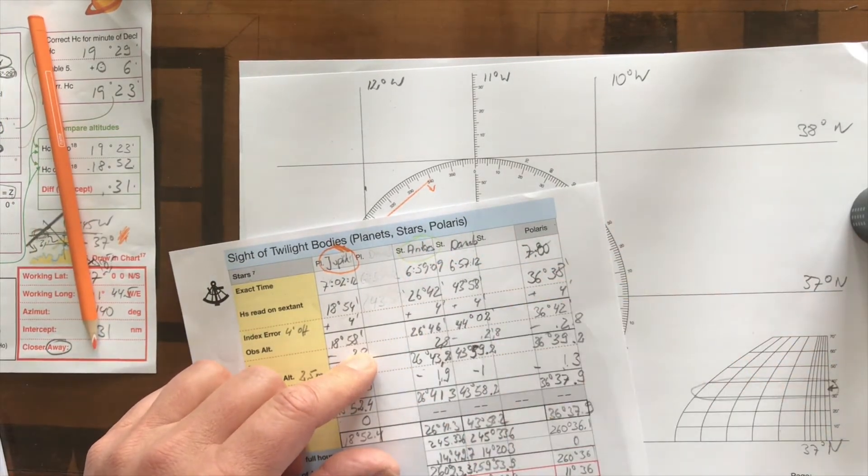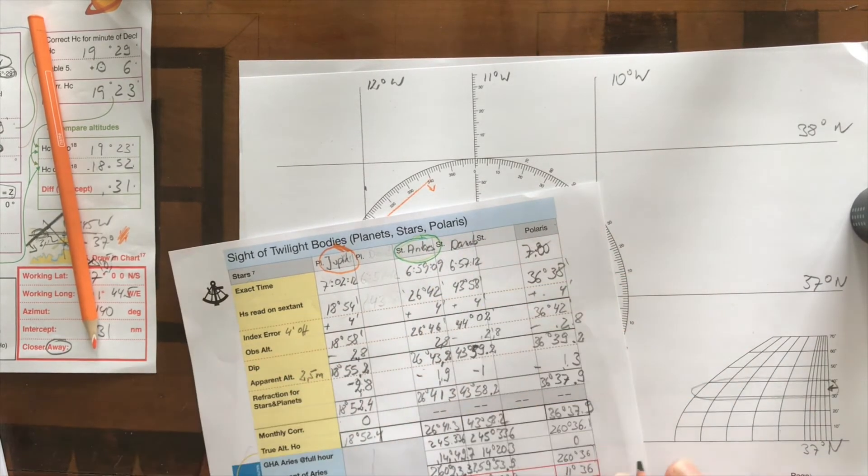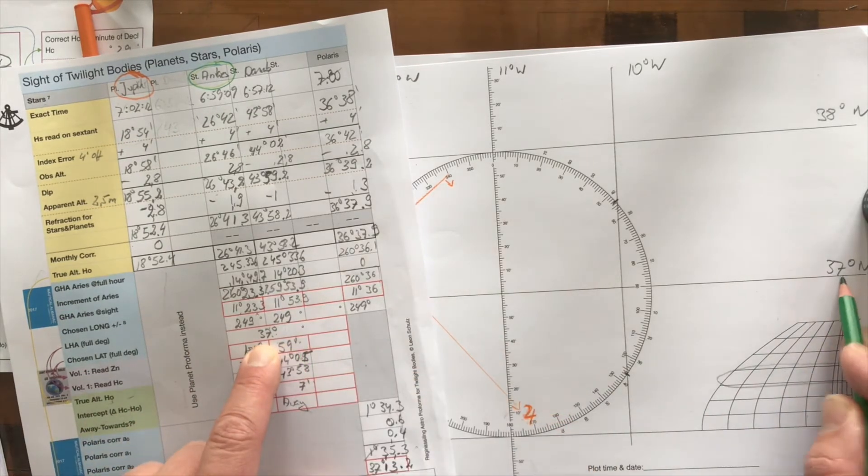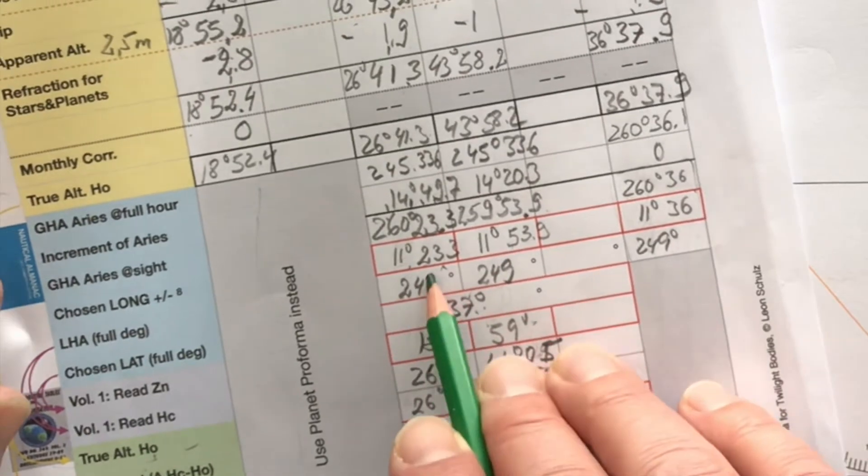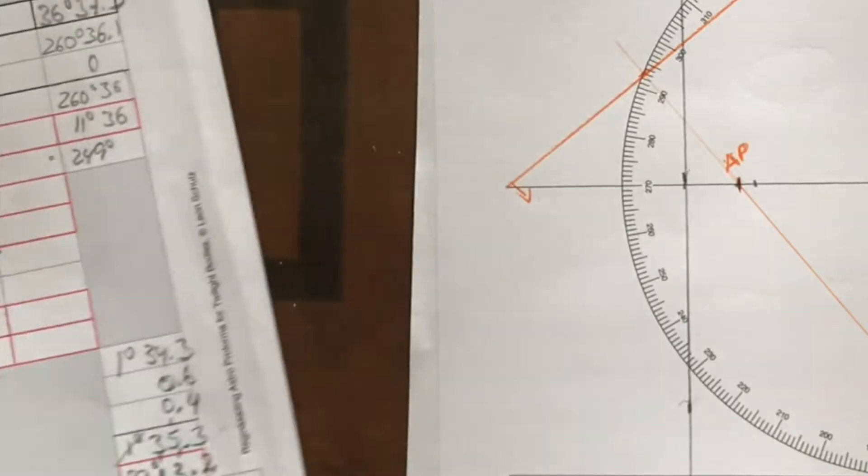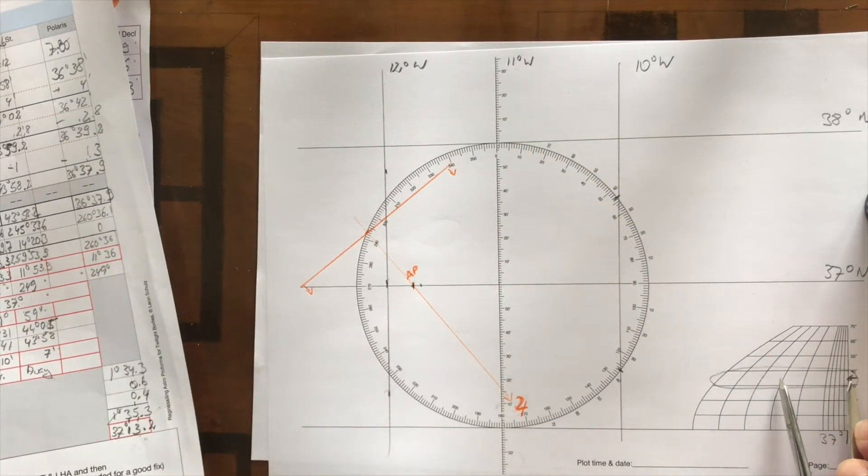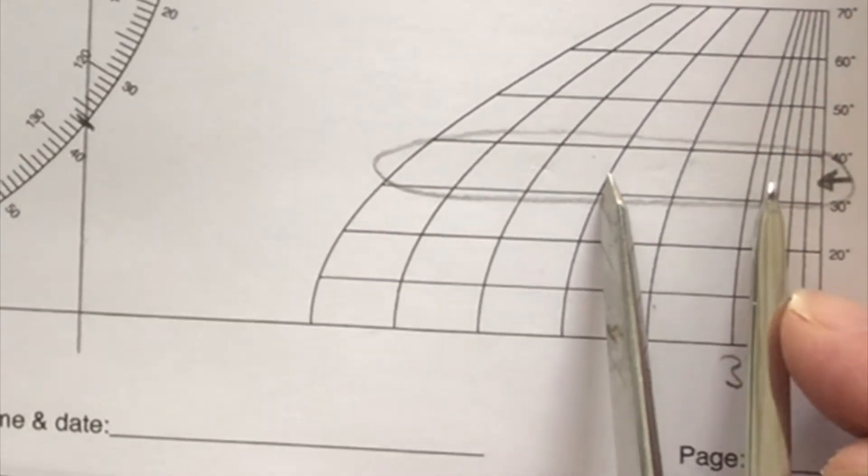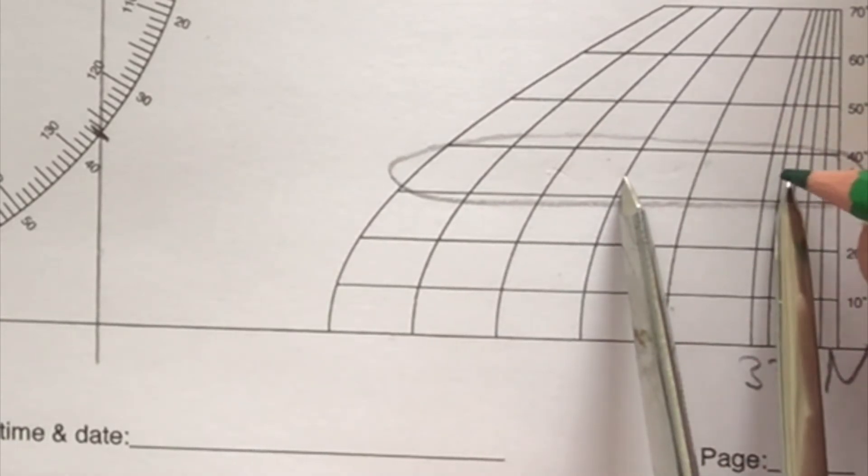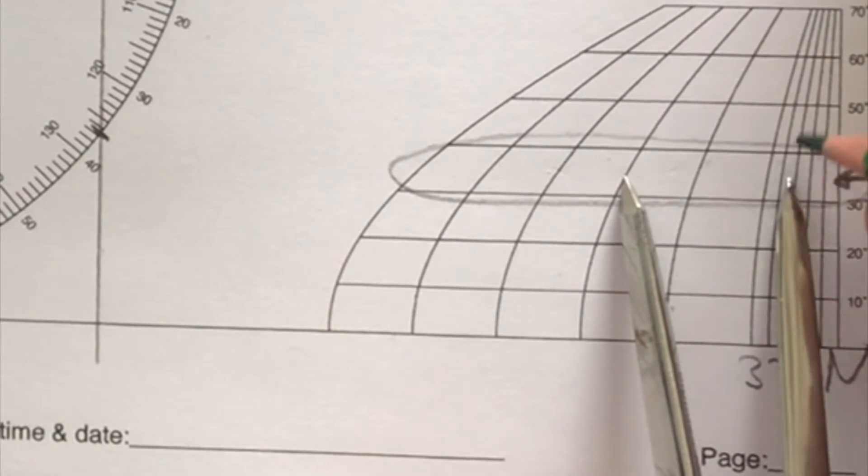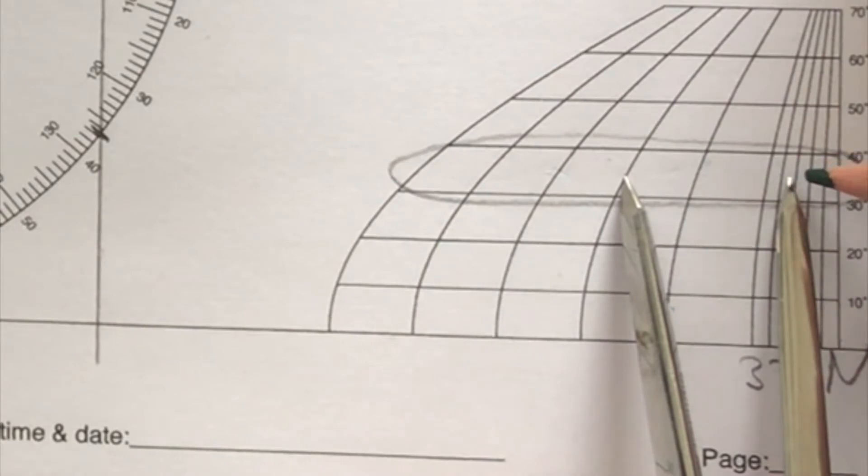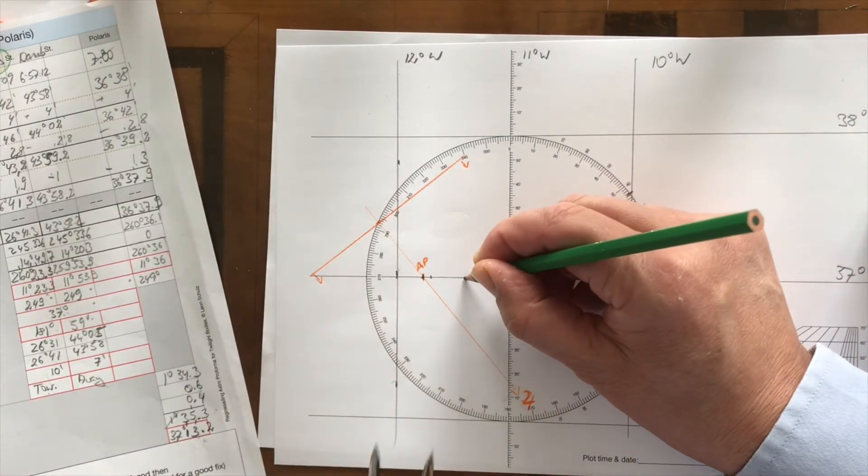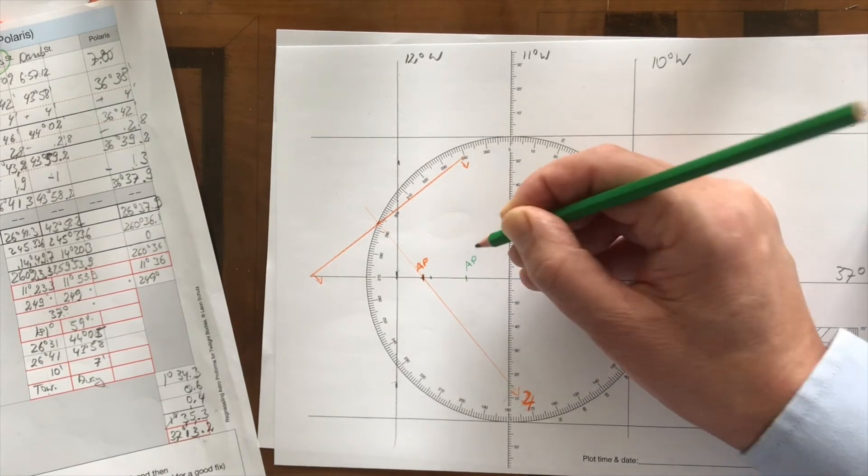Now let's take the next one. We take green for Antares. What do we have for Antares? We have a chosen latitude of 37, that's lucky because that's the same. Our chosen longitude is 11 degrees and 23 minutes west. So 11 degrees, and we can put it like this. You start from the left side because then you have 1, 2, 20. And then 3 is somewhere in between those two lines because it's 2 degrees per line here. We have 1, 2, 22, 23. So that is our assumed position for Antares.